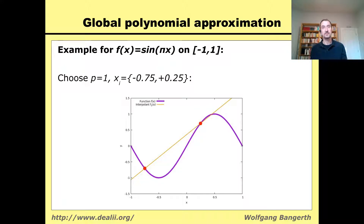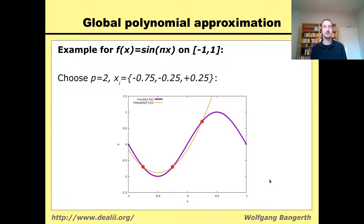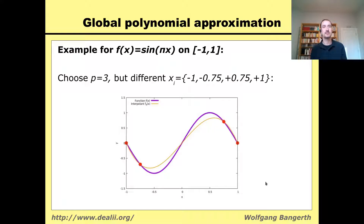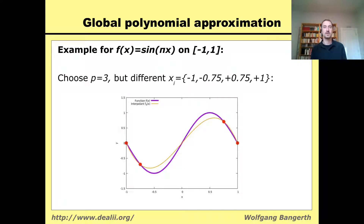For a piecewise quadratic function I need three points; for a piecewise cubic I need four points where the two functions are equal. I can choose them equidistant — equally spaced in the interval — but that is not required; I could choose any four points and define my interpolant that way. From these pictures you already see that if I choose more and more points corresponding to a larger polynomial degree, the orange curve comes closer and closer to the purple curve.